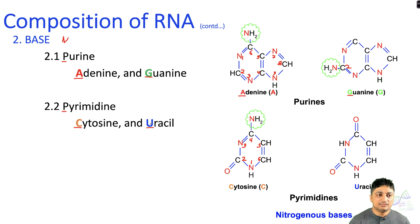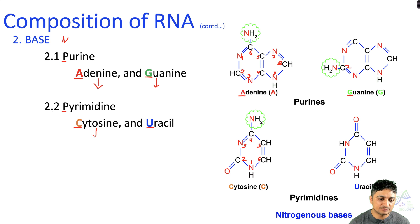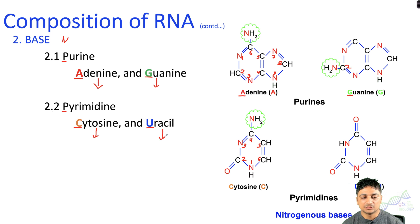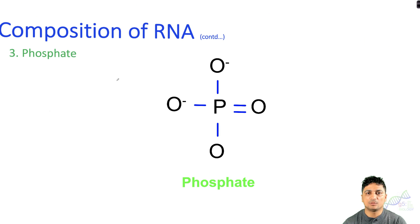So there are four bases in RNA: adenine, guanine, cytosine, and uracil. These are only the bases, but if we combine a base with sugar and phosphate, then adenine becomes adenosine, guanine becomes guanosine, cytosine becomes cytidine, and uracil becomes uridine. That combination of base plus sugar plus phosphate is the nucleotide.